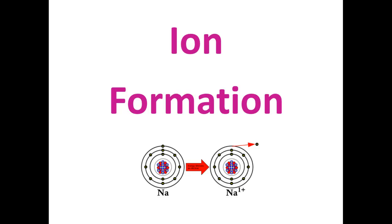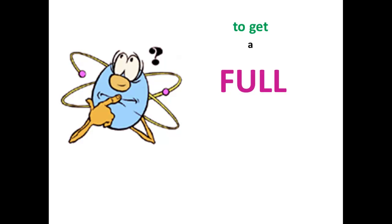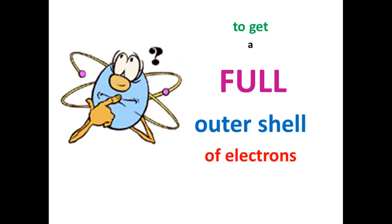This video explains how ions are formed from atoms and why. An atom has one dream in life and that dream is to get a full outer shell of electrons.